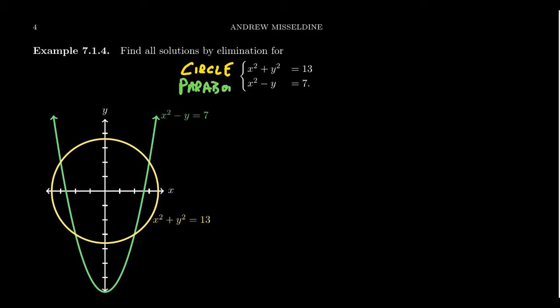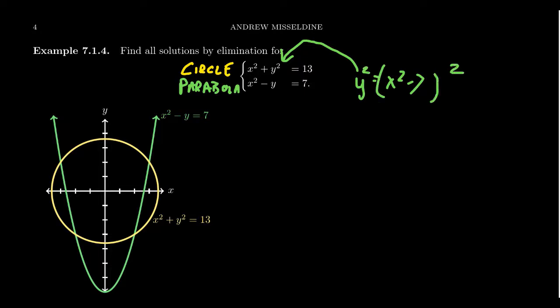It might be easier to see that if we solve for y: y = x² - 7. You could use substitution here, but if you plug that in for y, you'd have to square it, which means you'd get x to the 4th — a degree-4 polynomial. If there's a way of avoiding that, I would like to do so, which is why elimination might be a friendlier technique here.